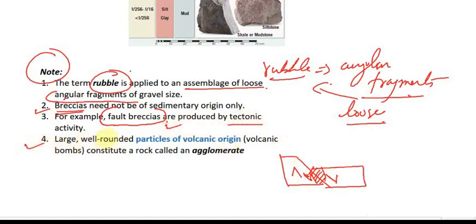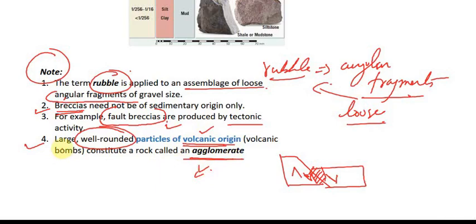Also, large well-rounded particles of volcanic origin are called agglomerate. If gravel-sized fragments are of volcanoclastic origin and they form a conglomerate-type rock, then that rock is called agglomerate.